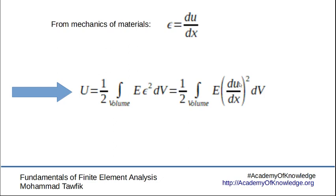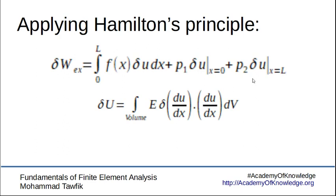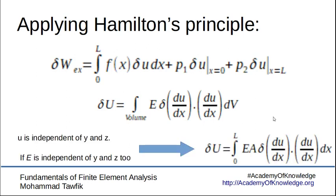Now we have both the potential energy and external work done as functionals of the deflection. We apply Hamilton's principle by taking the variation. The variation of the external work applies only on the deflection. For the potential energy, we have the differentiation squared, so using the chain rule we get the variation of the rate of change times the rate of change.